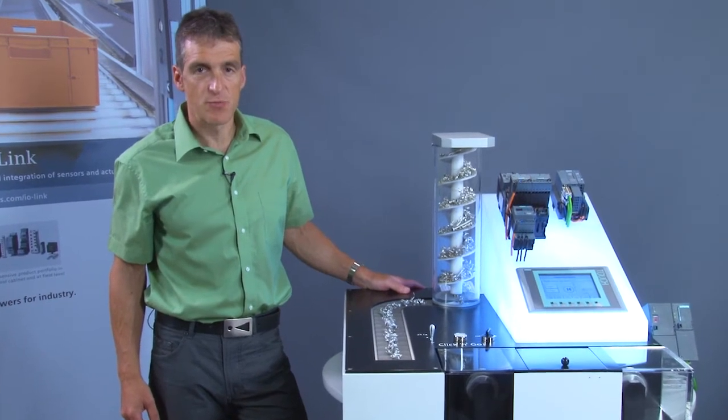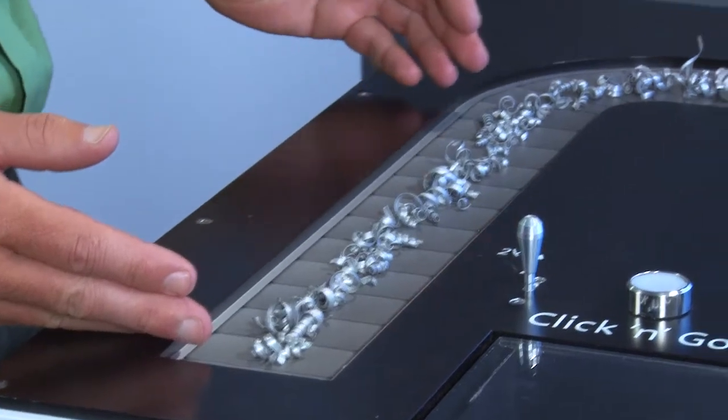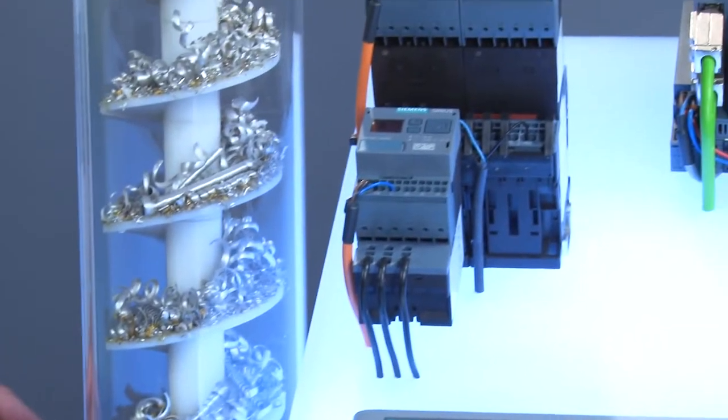The shavings removal system transports the metal shavings from the work area at the machine. The metal shavings are transported by means of a conveyor belt and a screw.